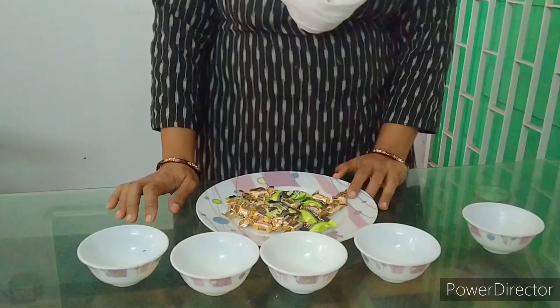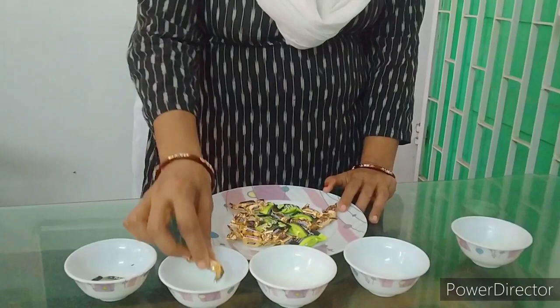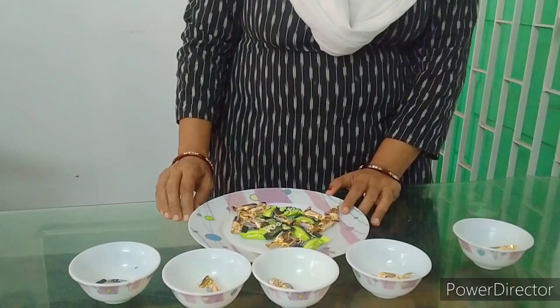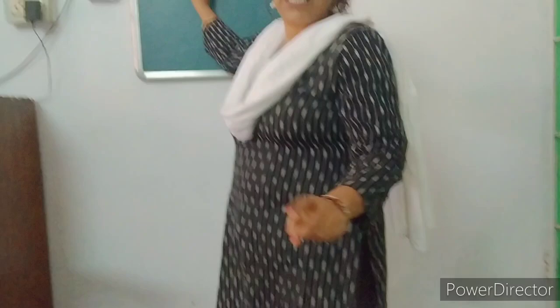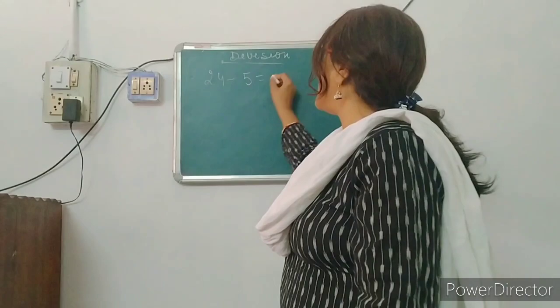First, I am going to put 1 chocolate in each bowl. In the starting, I have 24 chocolates and I put 1 chocolate in each bowl. That means 24 minus 5, 19 chocolates are there in the plate.